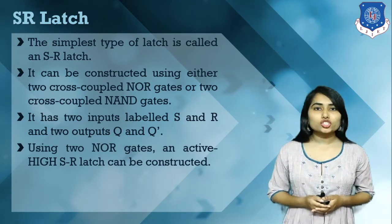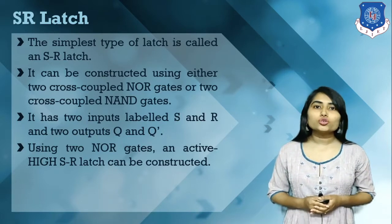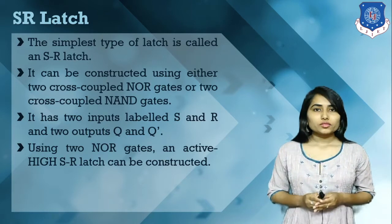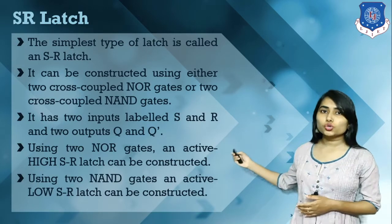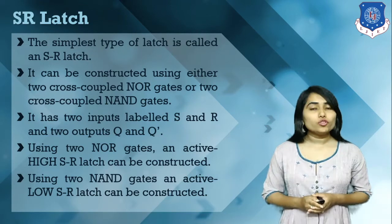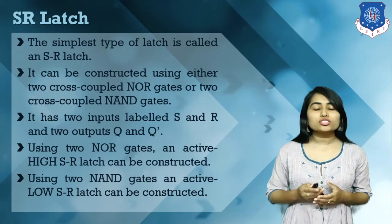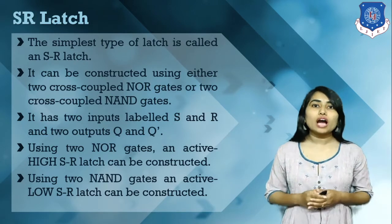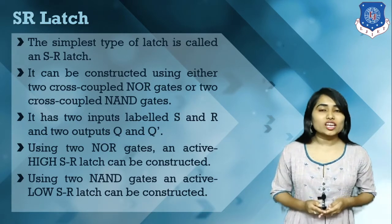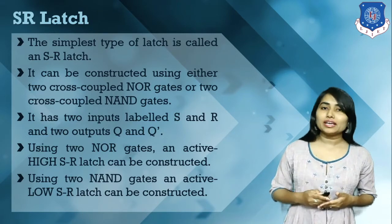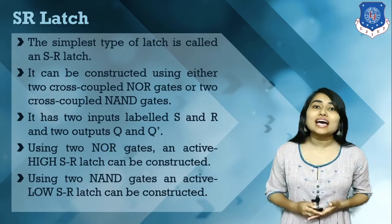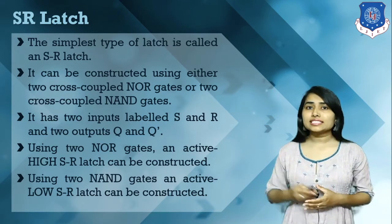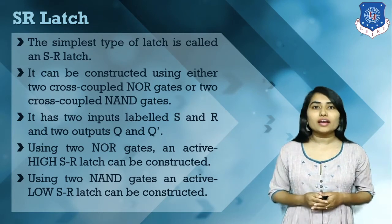The SR latch can be implemented using either two cross-coupled NOR gates, which gives an active high SR latch, or using two cross-coupled NAND gates, which gives an active low SR latch. Active high means the circuit produces output according to logic 1, while active low means the circuit produces output according to logic 0.